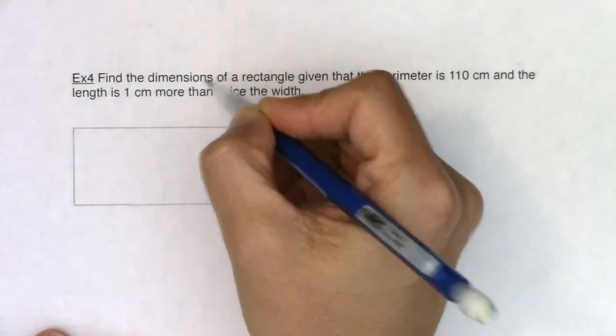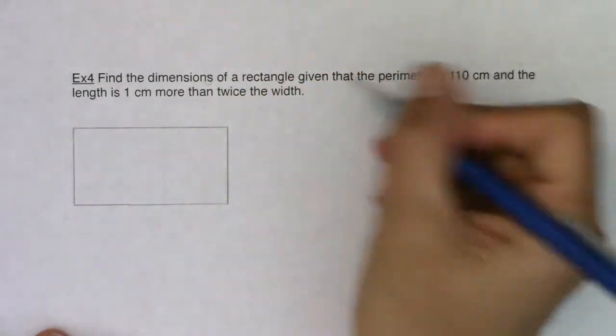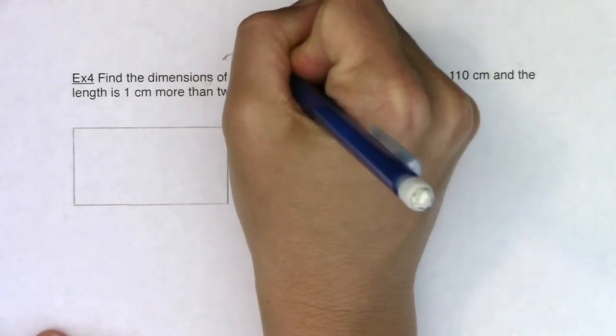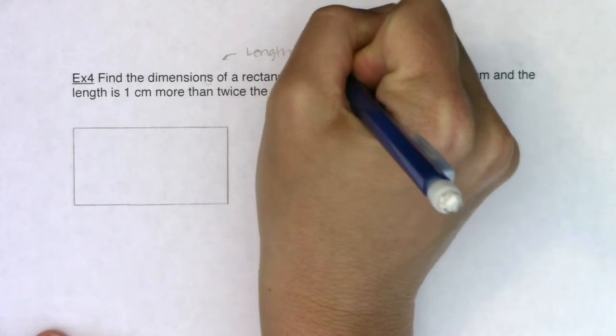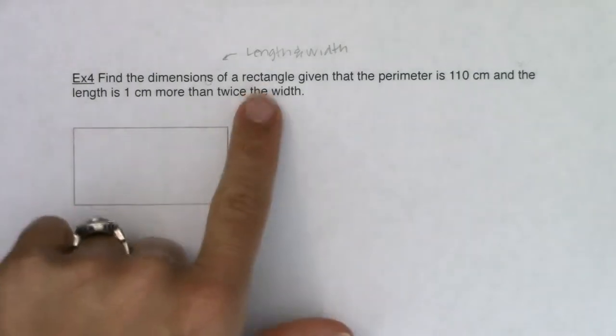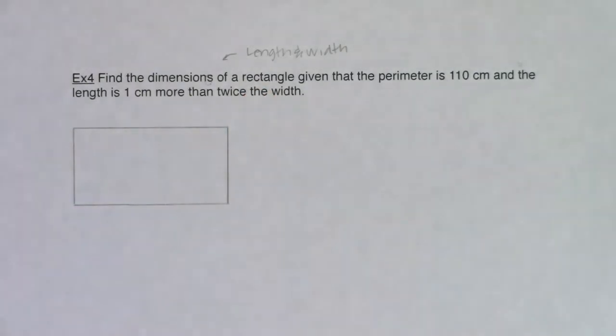So it says find the dimensions. I see plural, of a rectangle. So when I say dimensions, that means this problem is asking me for the length and the width. So out of those four pieces of the rectangle I just mentioned—length, width, area, and perimeter—it looks like I need to find two of them, the length and the width.